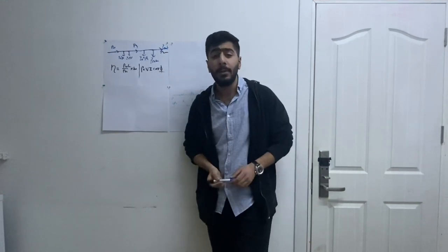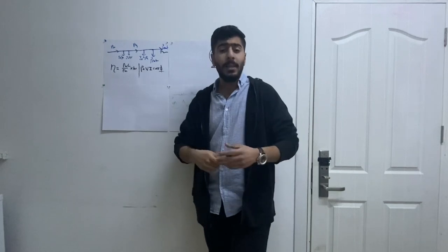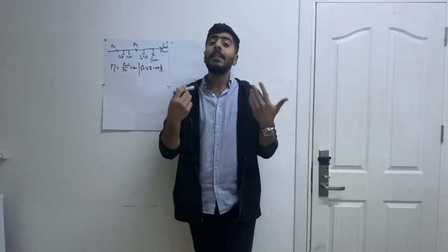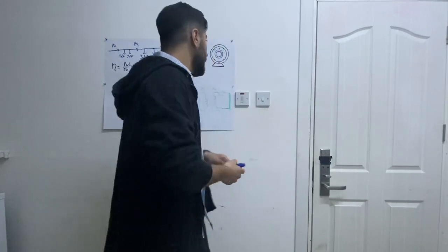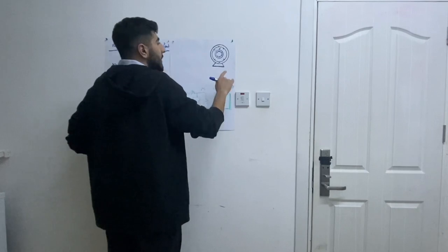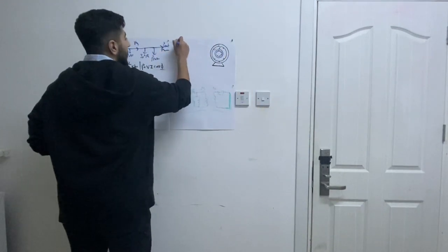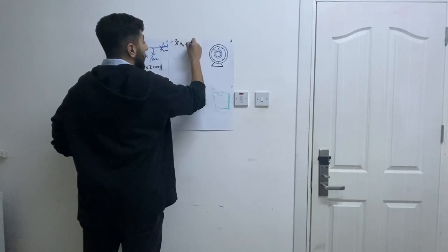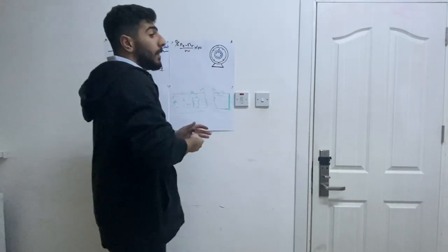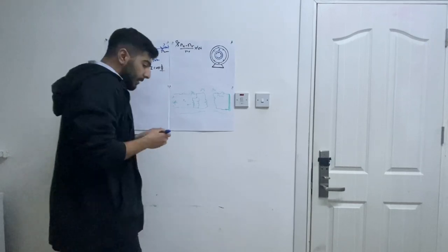Another name for an induction motor is an asynchronous motor. 'Asynchronous' means they are not synchronized together — specifically, the speed of the rotating magnetic field is different from the speed of the rotor. This difference is called slip. Slip is defined as: slip = (N_s − N_r) / N_s × 100, where N_s is the synchronous speed and N_r is the rotor speed. Slip is basically how much the rotor lags behind the circulating magnetic field.